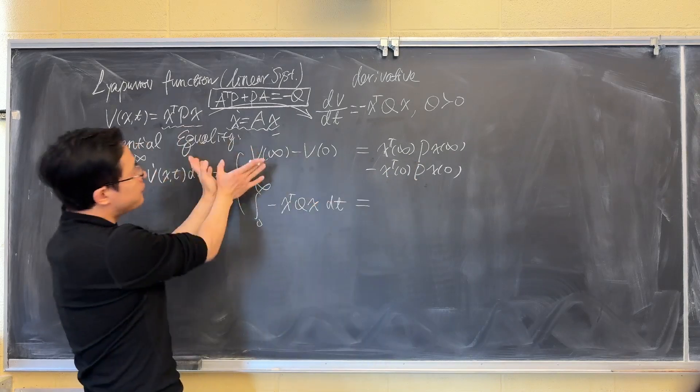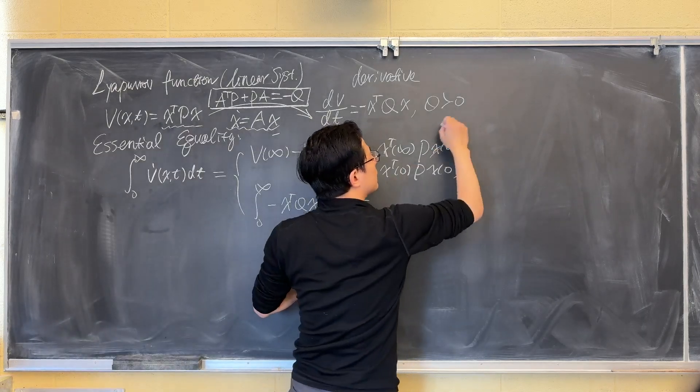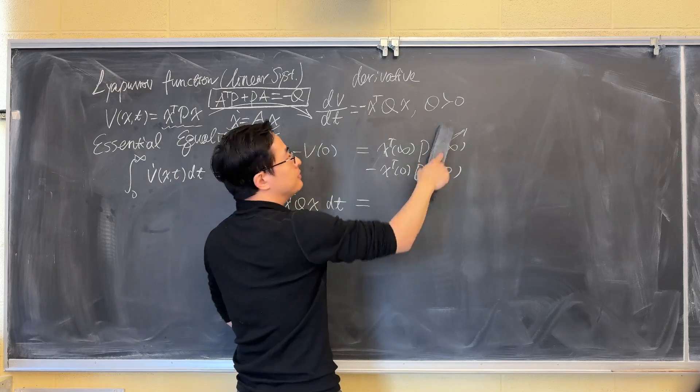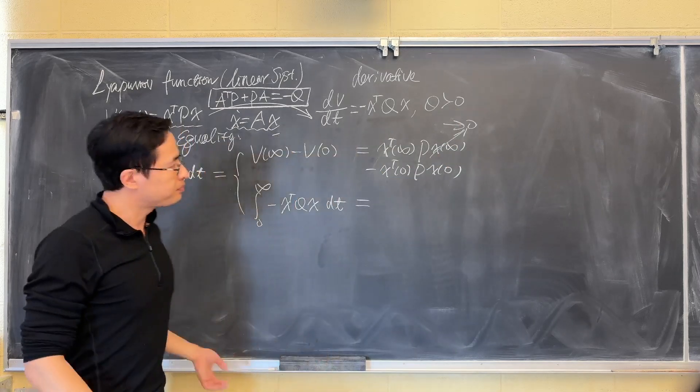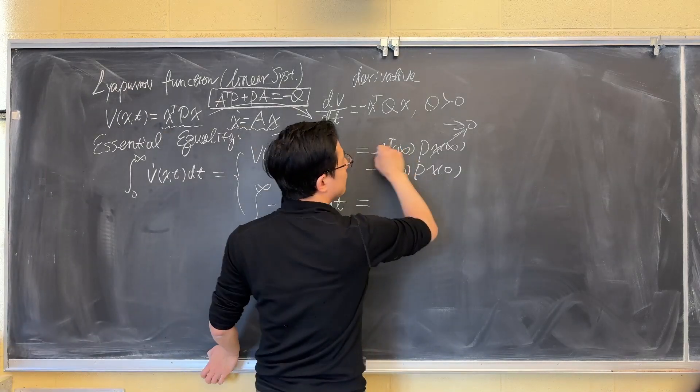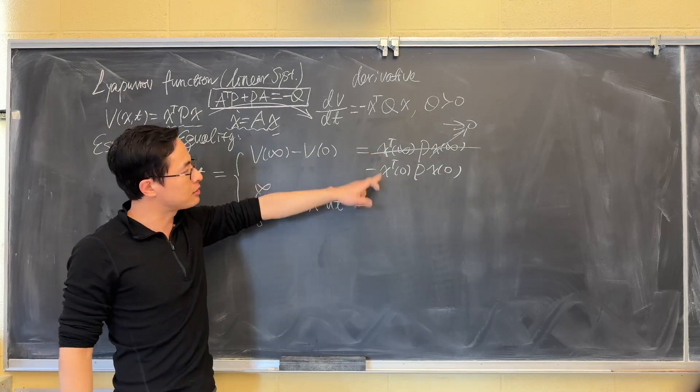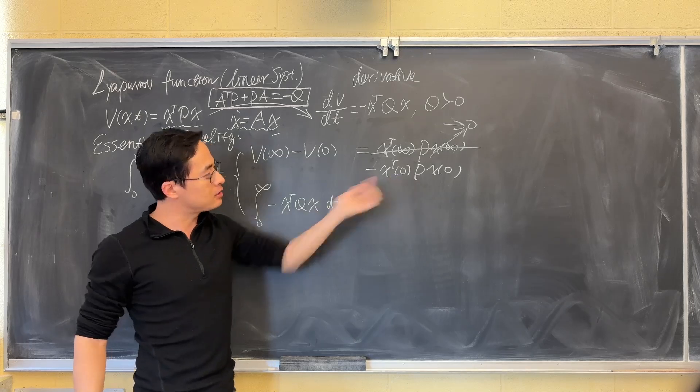And if the system is stable, then the state will go to 0 if it's asymptotically stable. Then on the left, the first term vanishes, you are left with something about P and the initial condition.